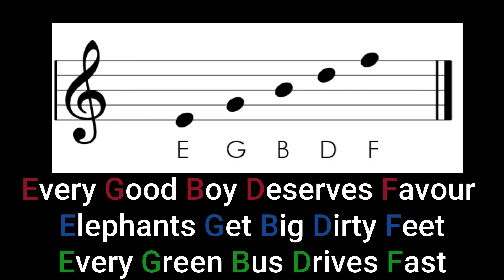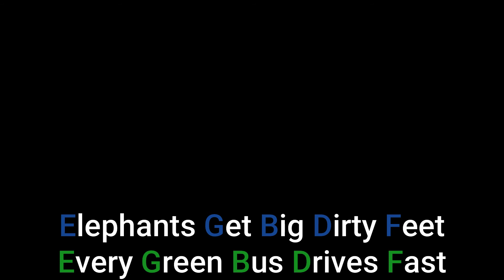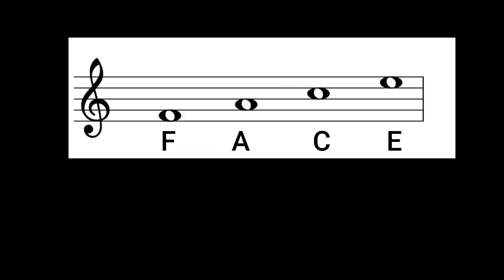Reading the notes upwards, the notes on the lines are E, G, B, D, F, and most people make up a rhyme to remind themselves of these notes. The notes in the gaps in the treble clef spell FACE, which is easy to remember.